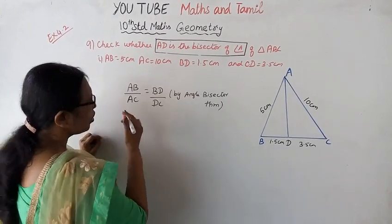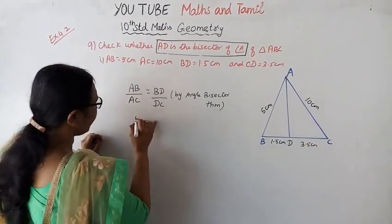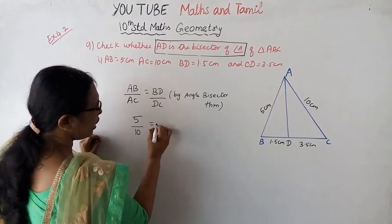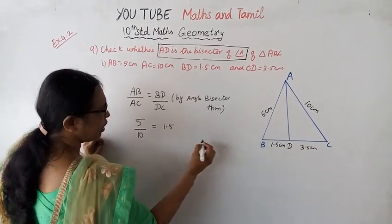Substituting the given values: AB is 5, AC is 10, BD is 1.5, and DC is 3.5.